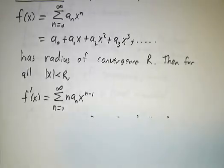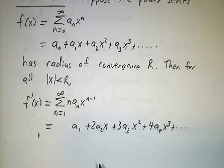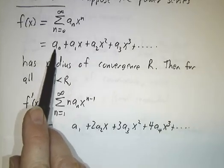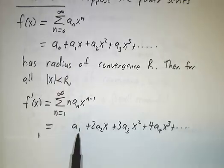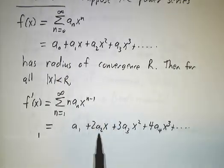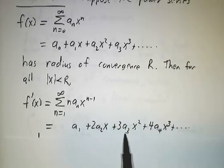Then the derivative of the function is given by this formula, which is just the derivative of this term by term. The derivative of a₀ is 0. The derivative of a₁x is a₁. The derivative of a₂x² is twice a₂x. The derivative of a₃x³ is 3a₃x².